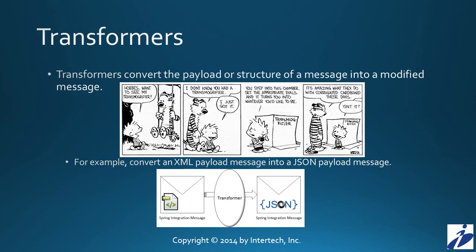In today's tutorial, we want to take a look at transformers. Transformers are yet again another message endpoint found in Spring Integration. In particular, transformers convert the contents or structure of a message into a modified message containing either a different payload, modified payload, or different structure. I'm reminded of the Calvin and Hobbes transmogrifier — Calvin built out of a cardboard box a mechanism to change one thing into another. That's essentially what a Spring Integration transformer does: it turns one message of some payload type into a new message of potentially different payload type.